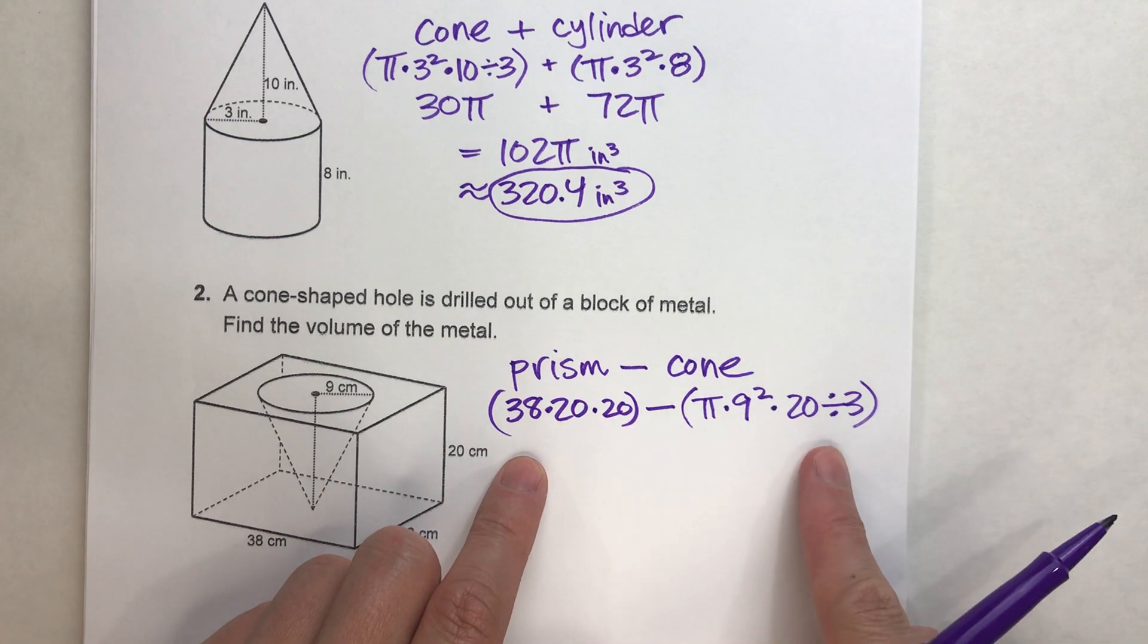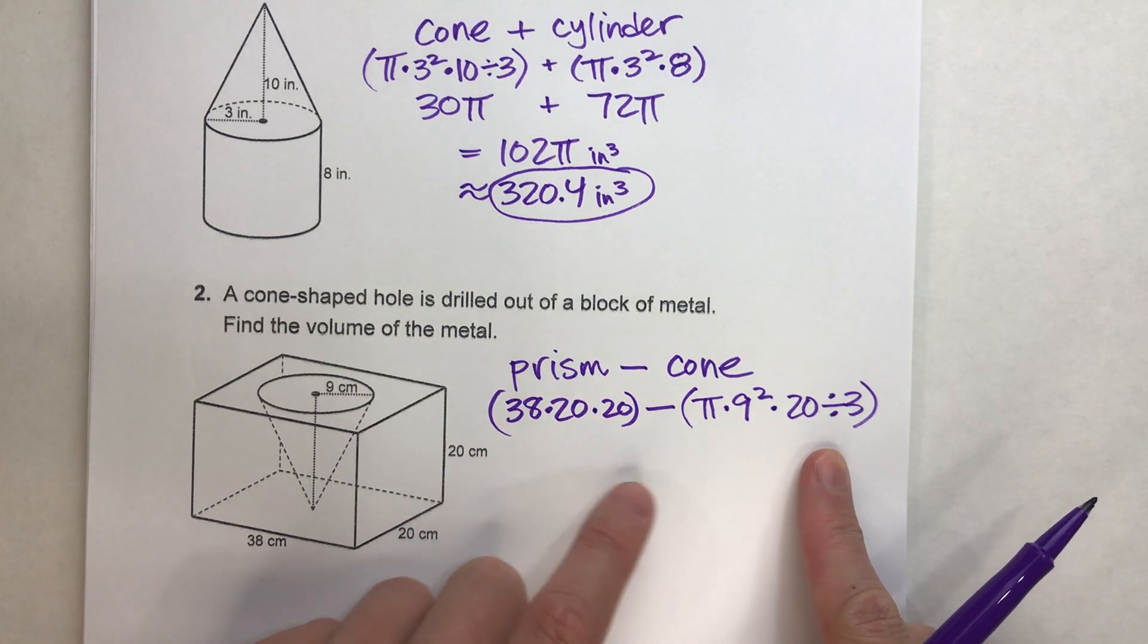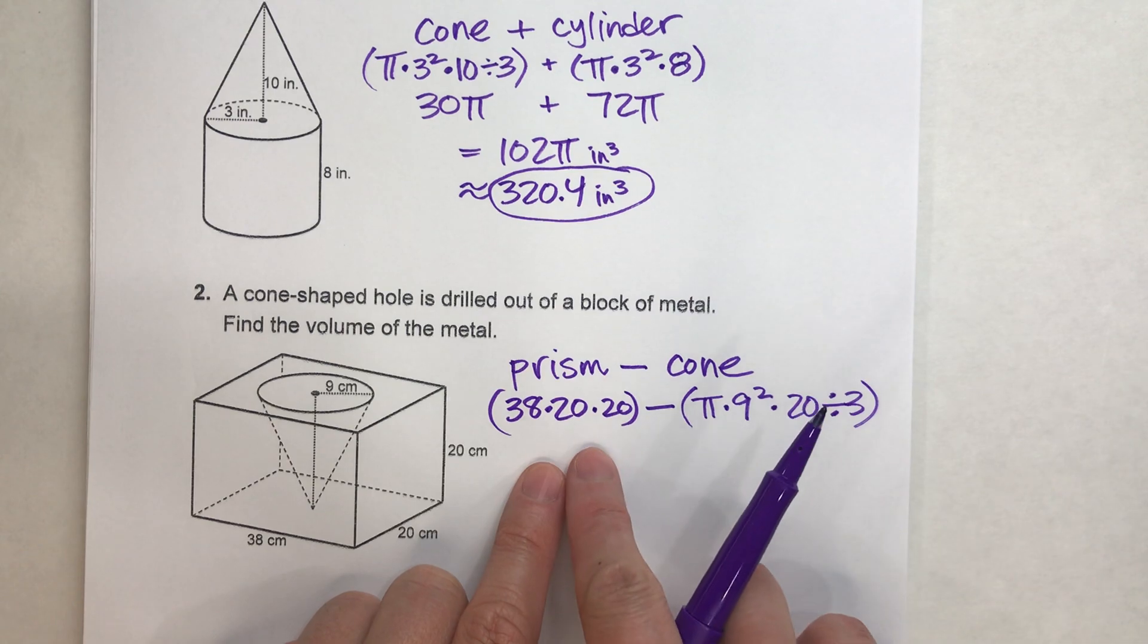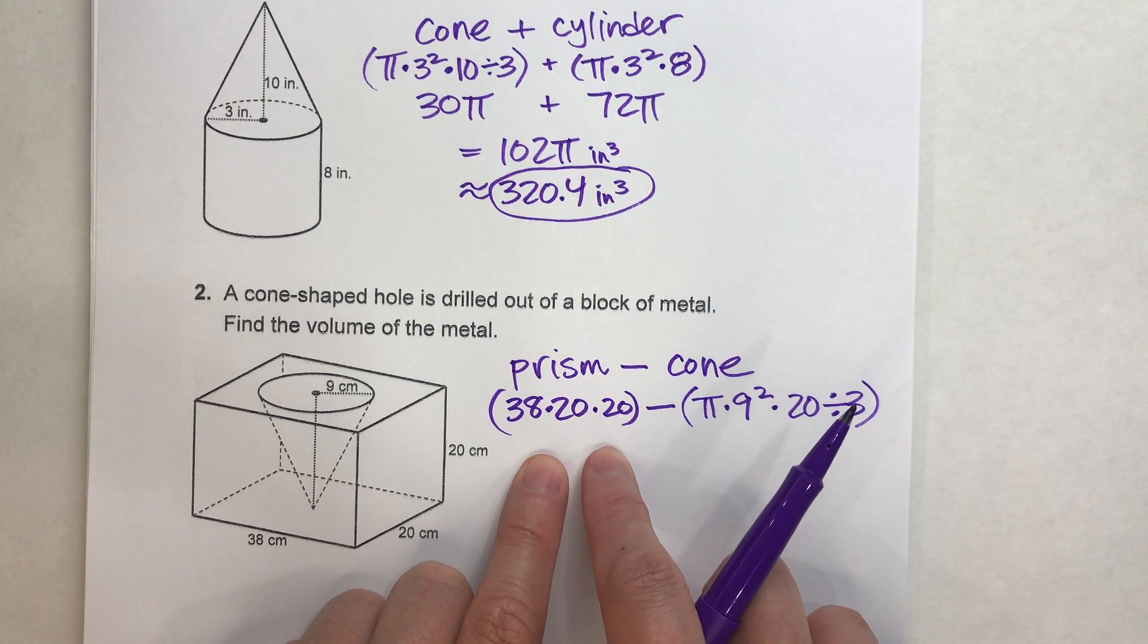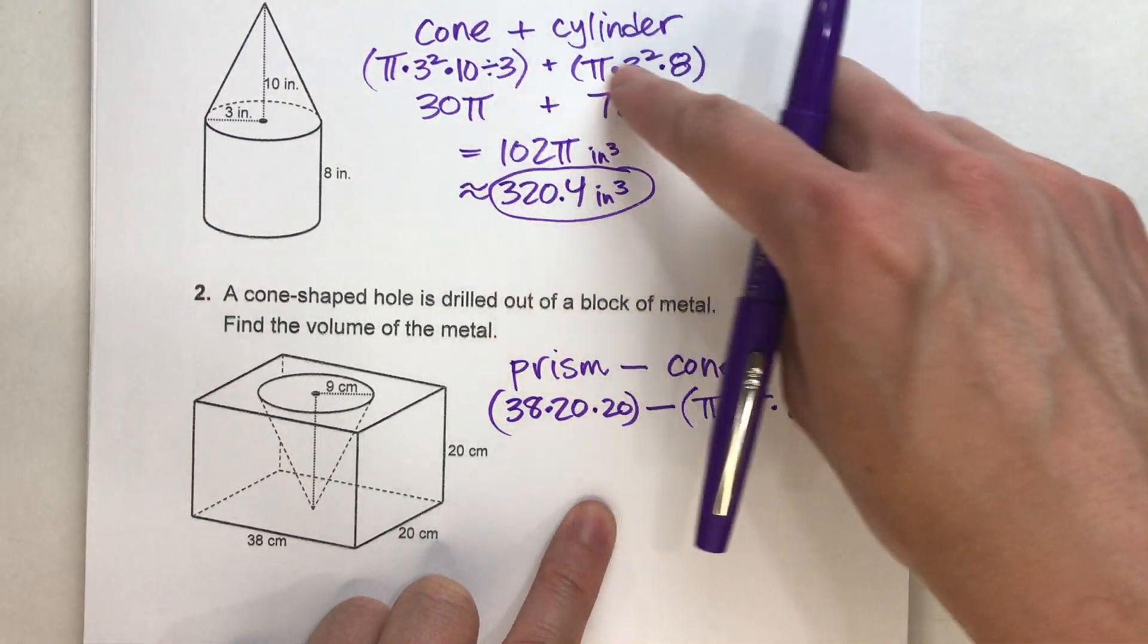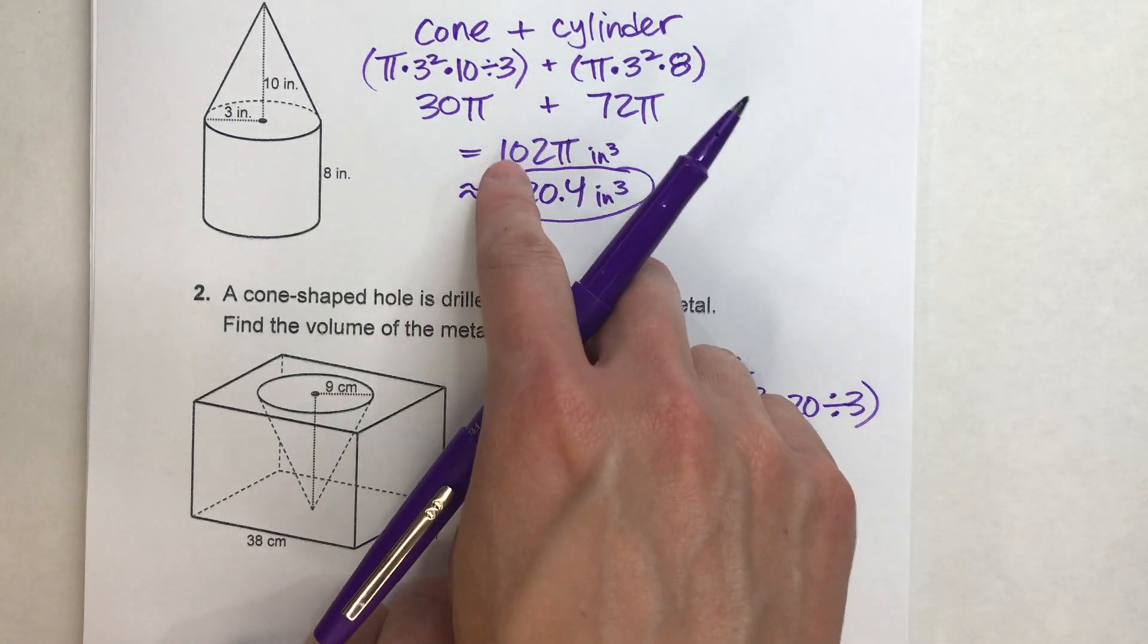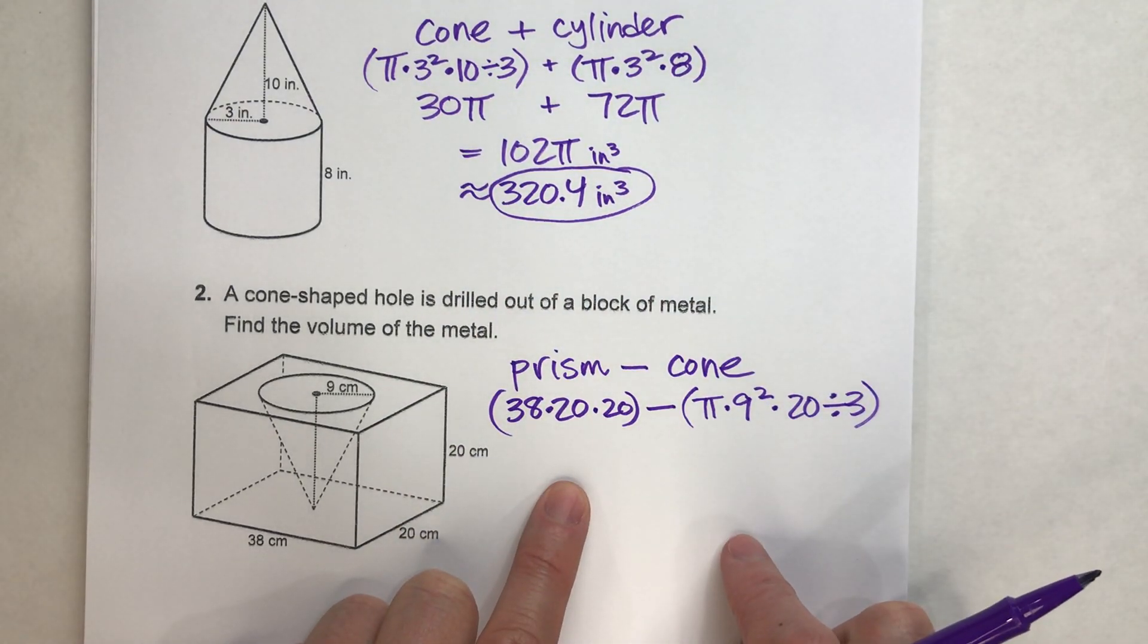So it looks pretty complicated. One thing to notice, though, the cone's formula has a pi in it. The prism's formula does not. So whereas before we had two parts that had pi in it, we can combine them together, this time we're not going to be able to do that.